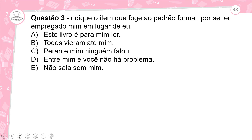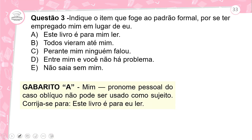Questão 3: indique o item que foge ao padrão formal por ter empregado 'mim' em lugar de 'eu'. As opções incluem: A) 'Este livro era para mim ler'; B) 'Todos vieram até mim'; C) 'Perante mim ninguém falou'; D) 'Entre mim você não há problema'; E) 'Não saia sem mim'. O gabarito é a letra A. O correto é 'Este livro é para eu ler', pois 'eu', do caso reto, funciona como sujeito do verbo. 'Mim' é pronome pessoal do caso oblíquo e não pode ser usado como sujeito.